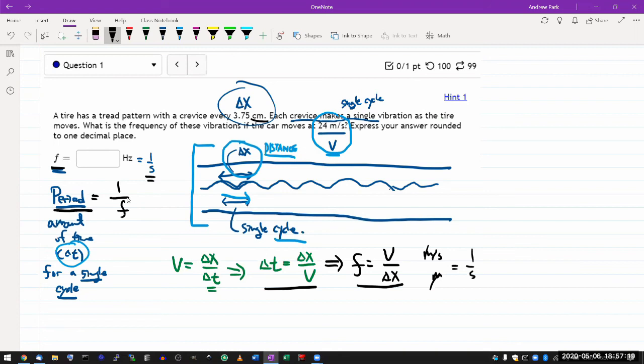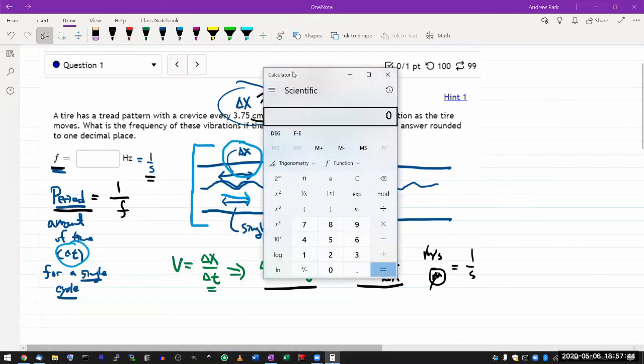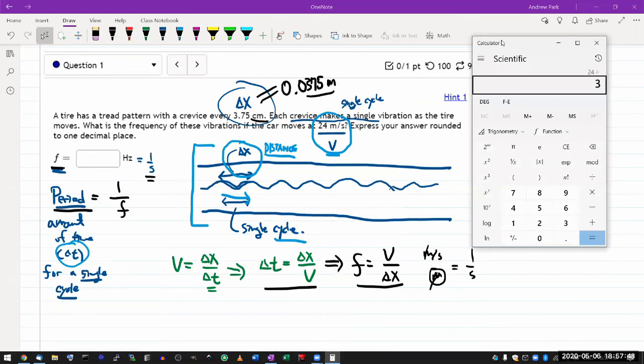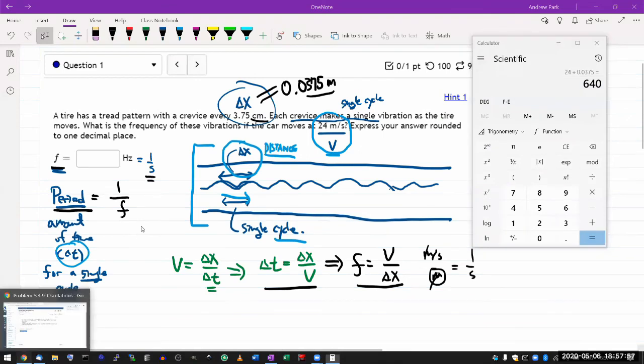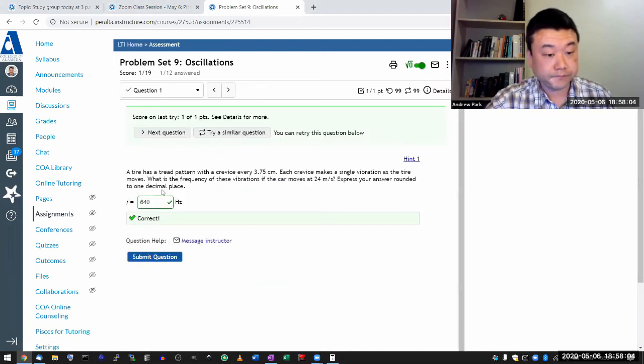So let me plug in the numbers and I guess I'll just see if I got the right answer. Now I was writing meters here. You do want to convert the units so that when you plug in the numbers you are plugging in correct numbers. So 0.0375 meters is the distance between the crevices, so the frequency should be the speed of 24 meters per second divided by 0.0375 or 640 hertz. Let's see if that is the answer. Yep. Thank you.